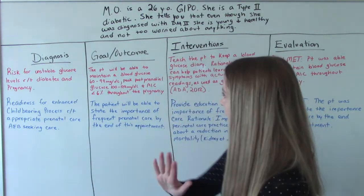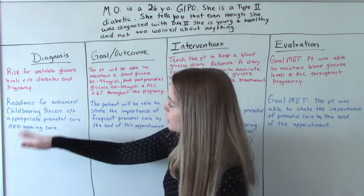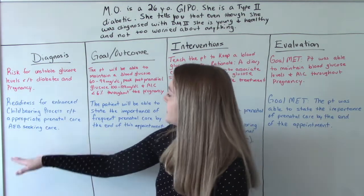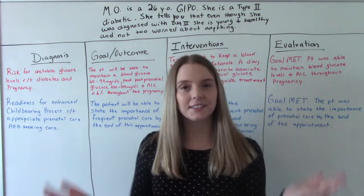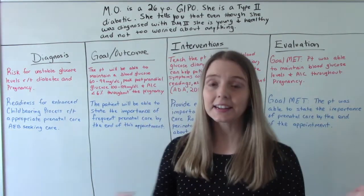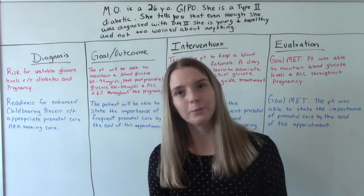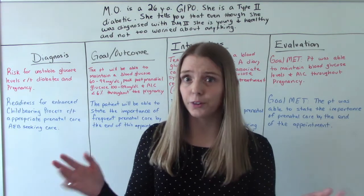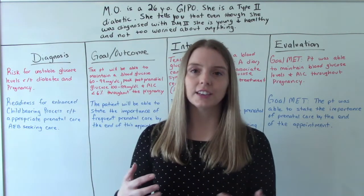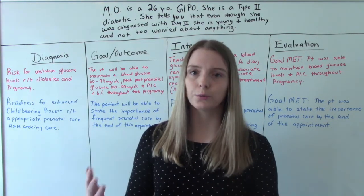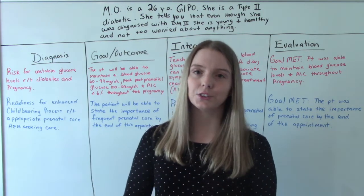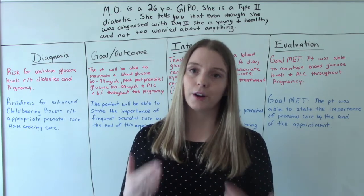Our next diagnosis: readiness for enhanced childbearing process related to appropriate prenatal care, as evidenced by the fact that she's here seeking care — she's here at the clinic for her appointment. I know that seems like the most minimal effort ever, but so many people do not do that. The fact that she's even here for this first prenatal appointment is a big deal, and it's a good sign that she's going to get good care and have a healthy pregnancy.